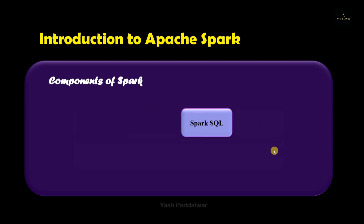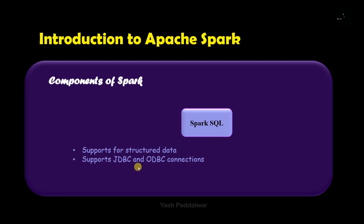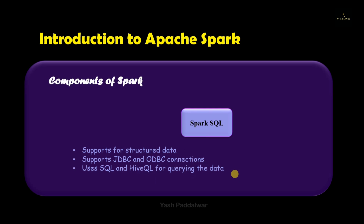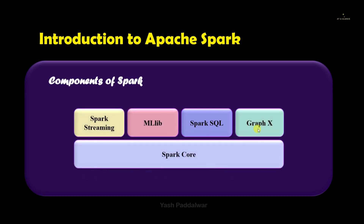The next component is Spark SQL, which supports structured data containing a specified schema. Spark SQL supports JDBC (Java Database Connectivity) and ODBC (Open Database Connectivity), which make it possible for applications to access data from different databases. It accesses and deals with data through SQL (Structured Query Language) and HiveQL (Hive Query Language) for querying the data. This component is proven to be powerful for both streaming as well as historical static data, making huge tasks easier to perform.